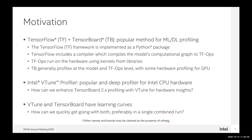TensorFlow includes a compiler which compiles the model's computational graph to TensorFlow ops. TensorFlow ops run on the hardware as part of the Python program and are implemented on the hardware itself using kernels from libraries like Eigen or MKL. TensorBoard and TensorFlow generally profile at the model and TF ops level for some GPUs. There is some hardware profiling exposed through TensorBoard, but for CPUs, using something like VTune can help you get more visibility into what's running on the hardware.